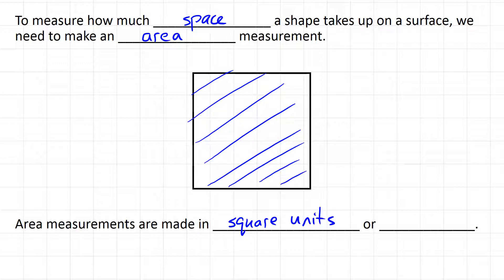So area measurements are made in square units, or we sometimes will write squared as a little 2. So we could say units squared. And I'll show you a couple of examples of what that looks like.